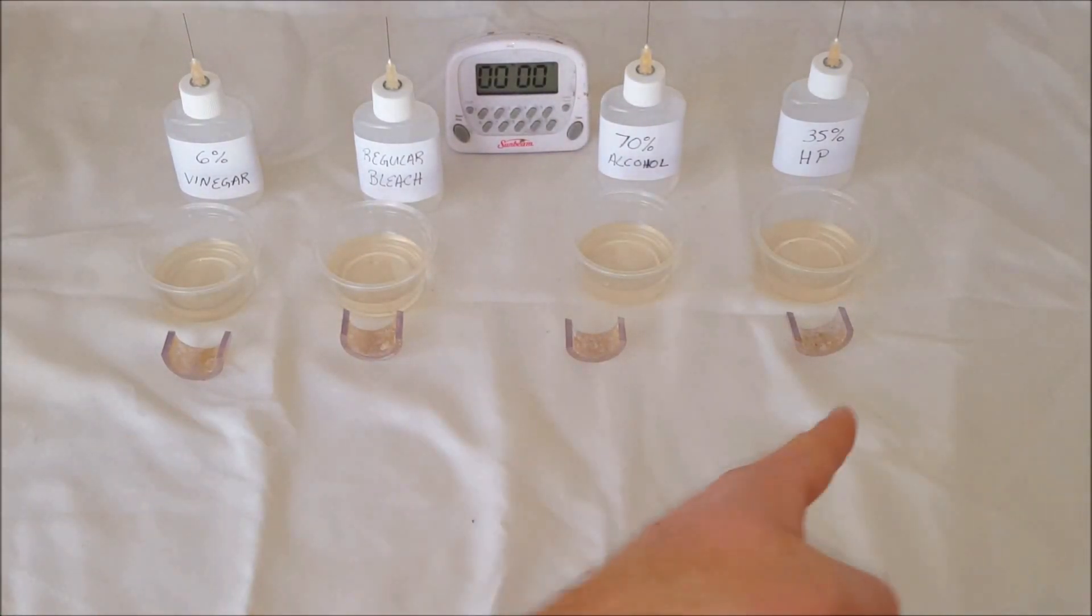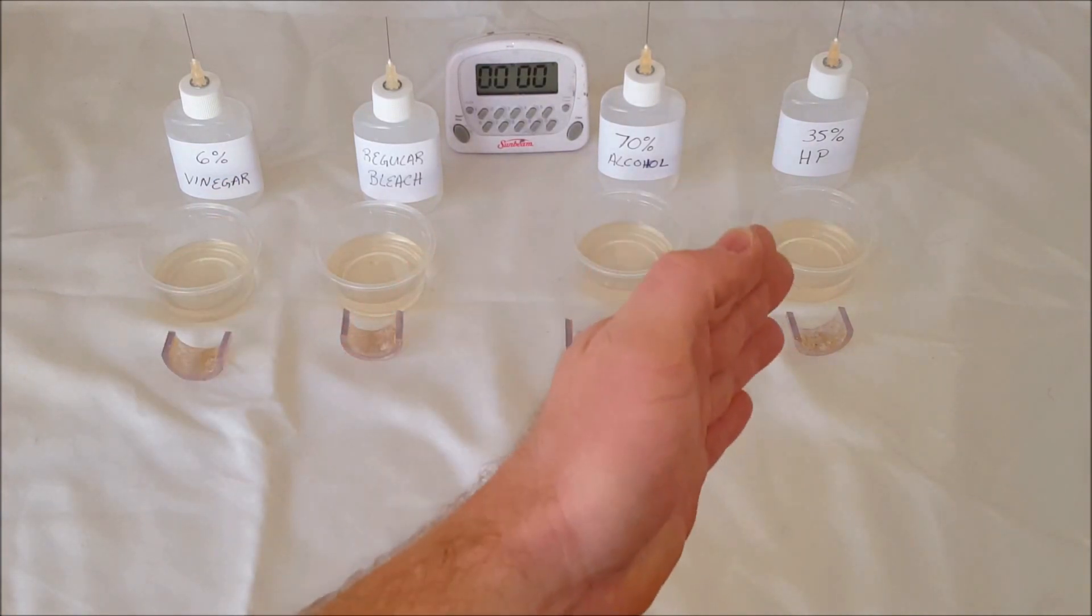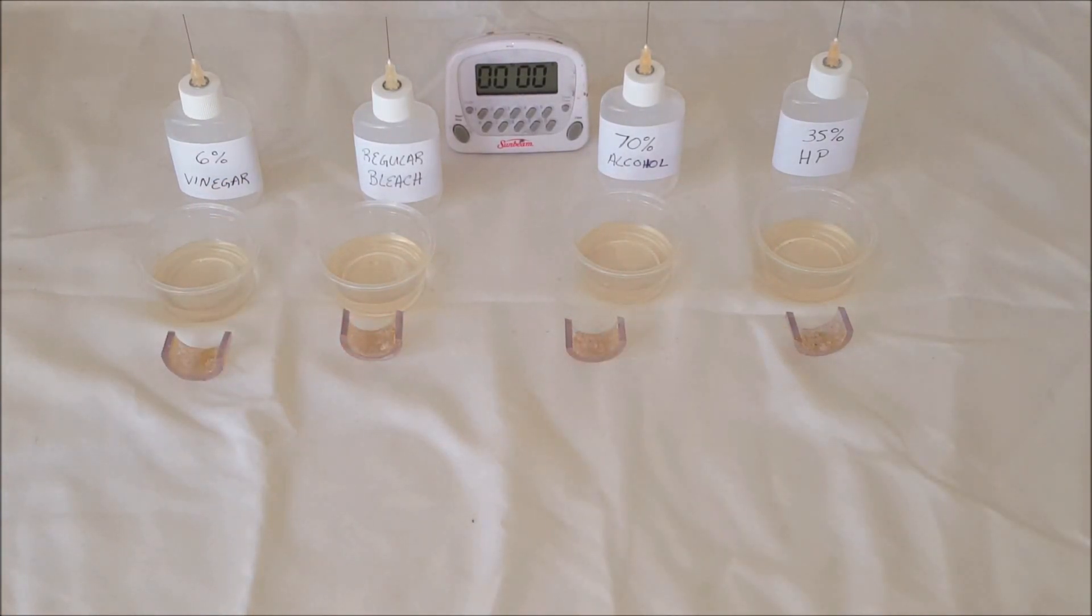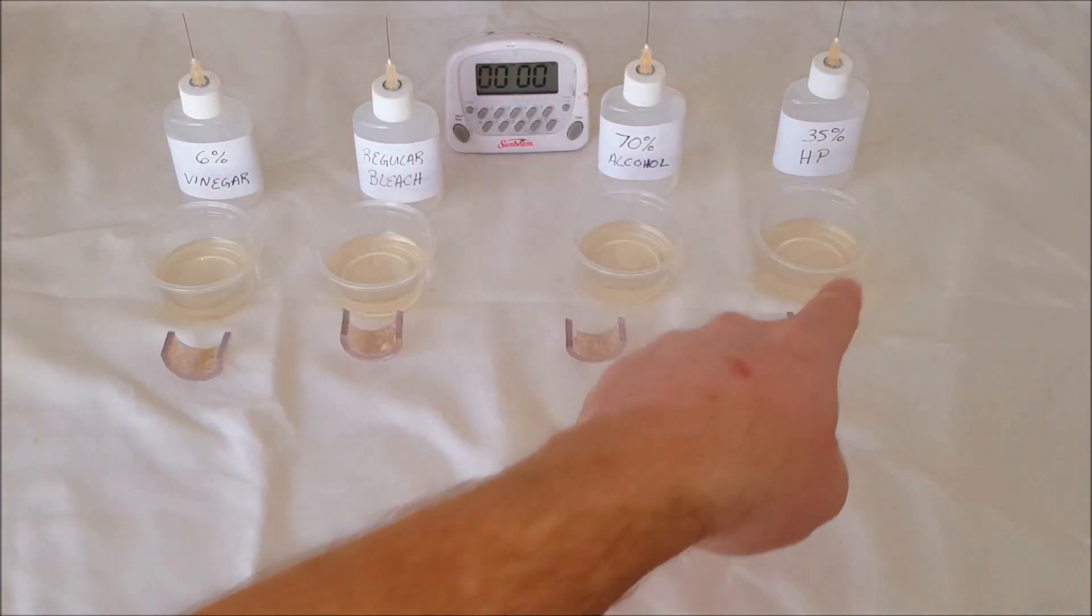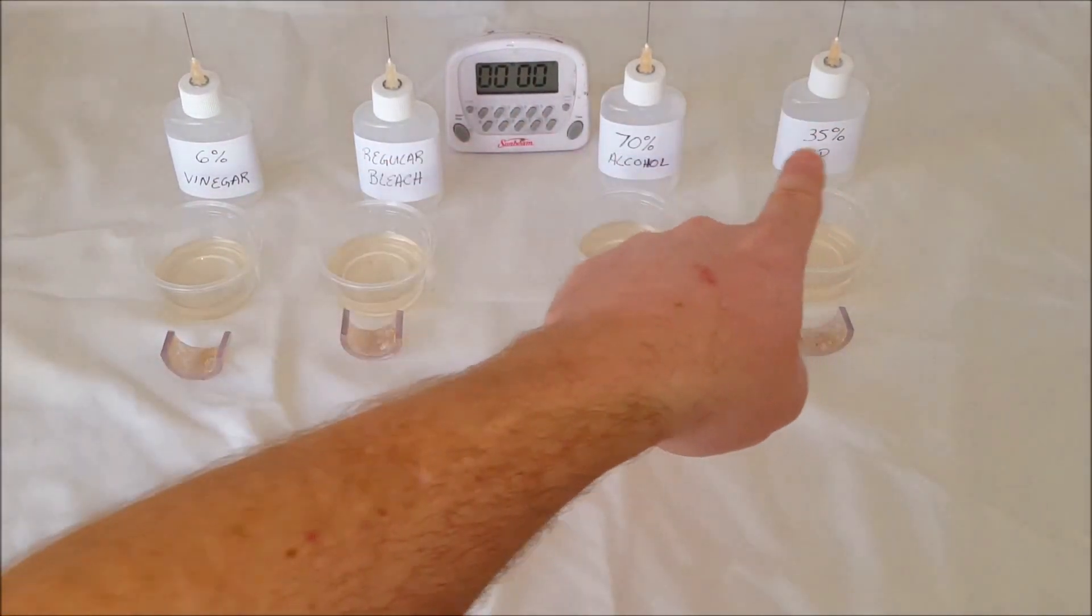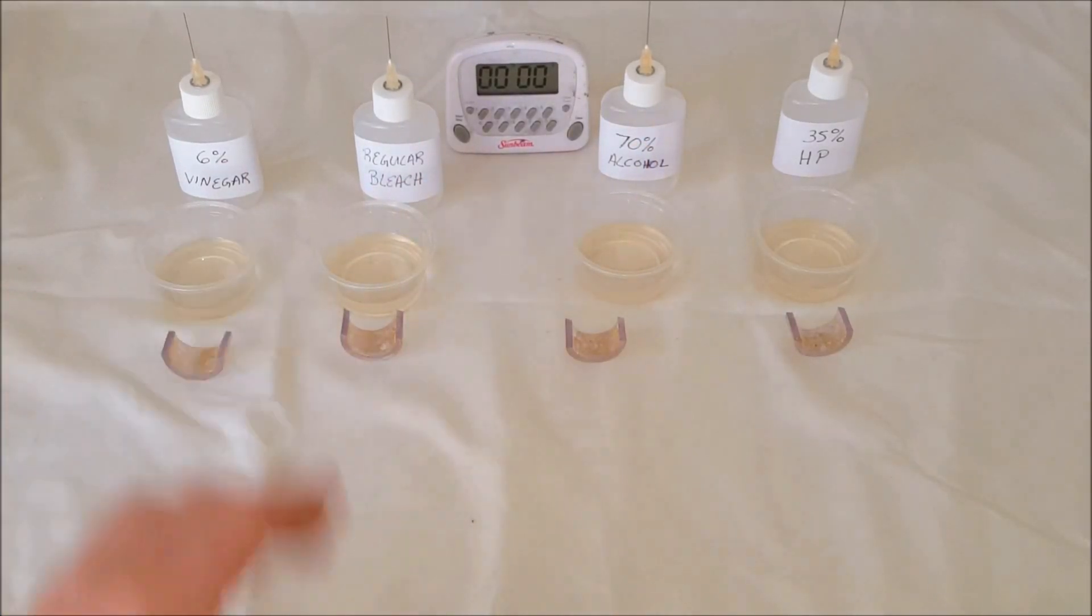We took one piece of hose cut it into four pieces and we're going to try it with six percent cleaning vinegar, regular bleach, 70% alcohol, and 35% food grade hydrogen peroxide. What we're going to do is put a few drops on each hose and then whatever is left over will go inside this dirty water. It's two tablespoons inside of each cup and each container that holds the chemicals has a half a teaspoon inside of it.